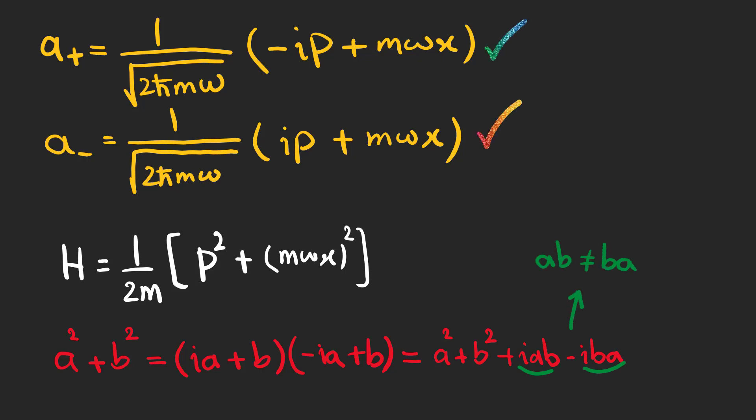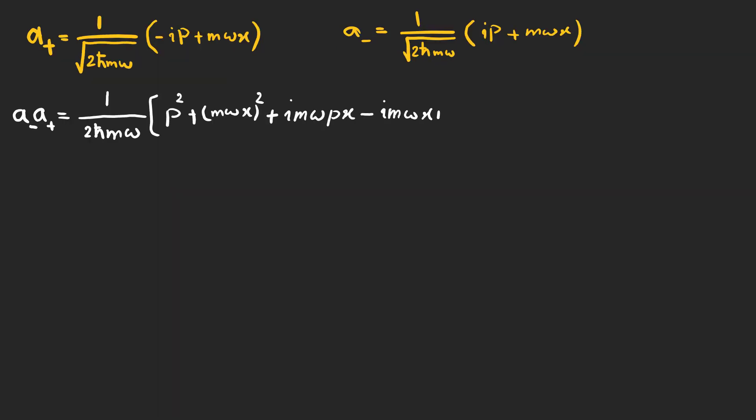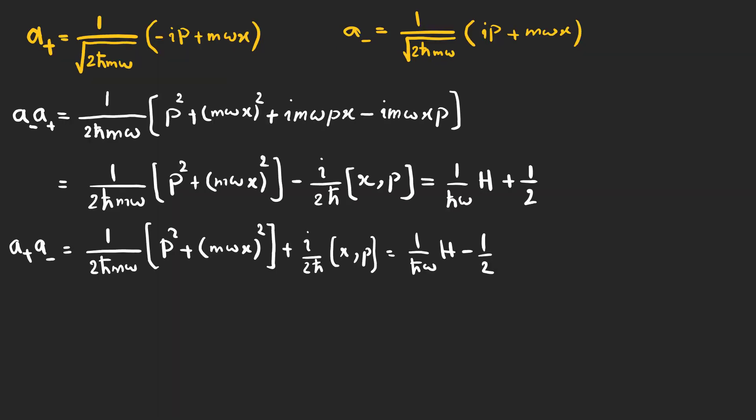However, we define these two operators to see if we can find an expression for the Hamiltonian that really helps. Let's calculate a minus a plus and a plus a minus. Using these two operators, we can rewrite the Hamiltonian like this. And our commutation relation is like this.